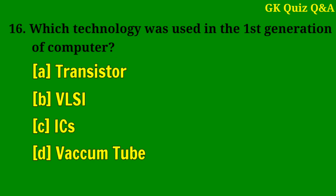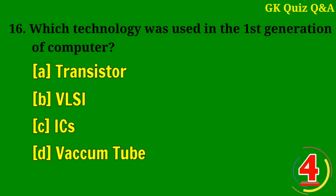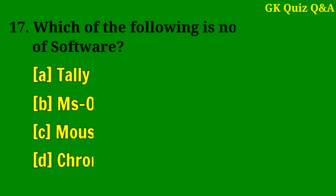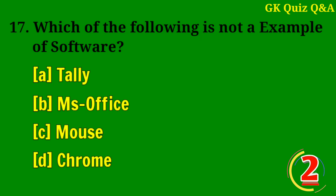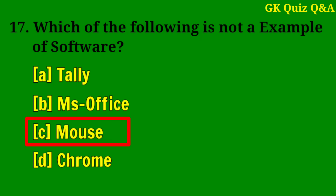Which technology was used in the first generation of computers? Answer D: Vacuum tube. Which of the following is not an example of software? Answer C: Mouse.